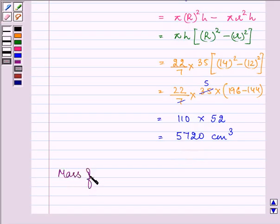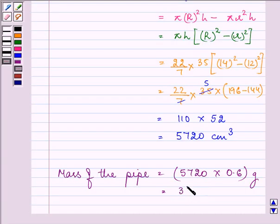So the mass of the pipe is equal to 5720 into 0.6 grams. The answer will come out to be 3432 grams.